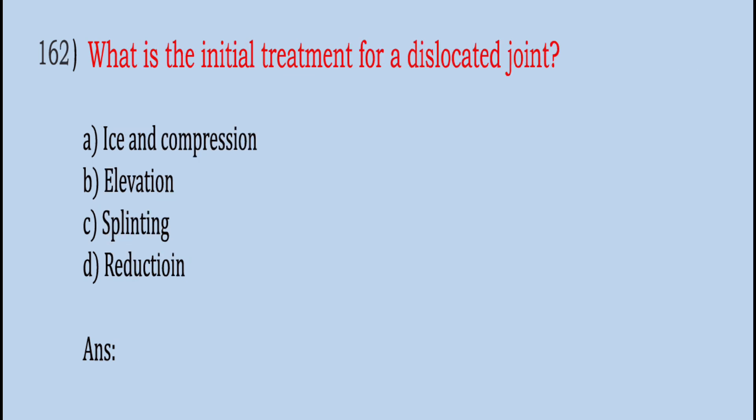What is the initial treatment for a dislocated joint? Ice and Compression, Elevation, Splinting, Reduction. The correct answer is C, Splinting.